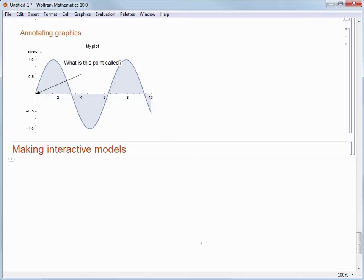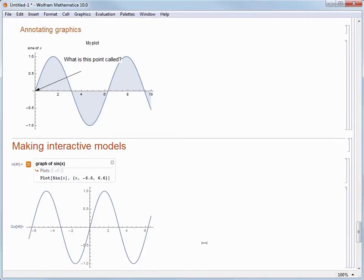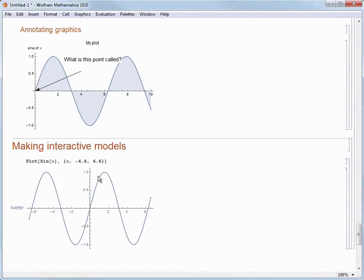I'm going to type an equal sign to start a freeform input command and then I'm going to type graph of sine of x and evaluate. Once I get the result, I'm going to click on the Wolfram Language command and throw away that freeform input and now I'm left with a clean, nice and easy command that I can build upon.